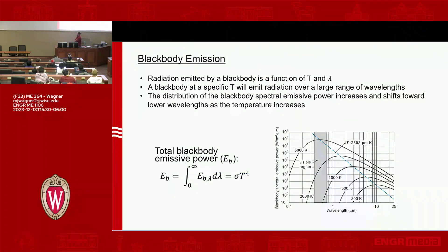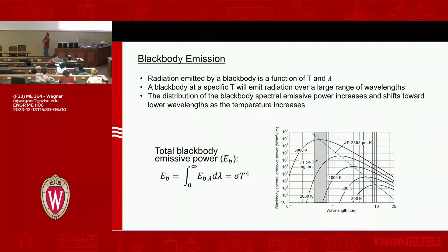The other major thing we talked about was black body radiation. So a review of these concepts: black body radiation is radiation emitted by this ideal surface that we call a black body.